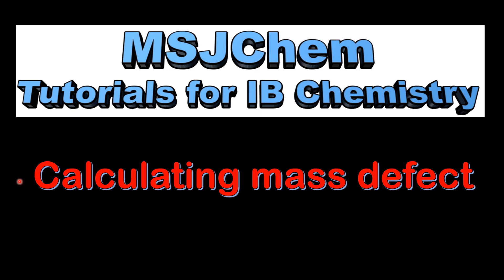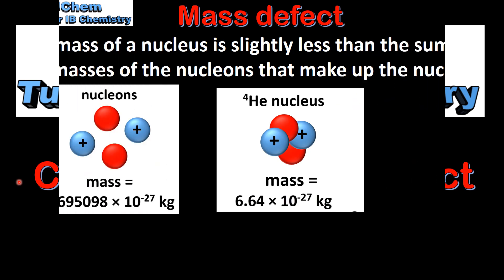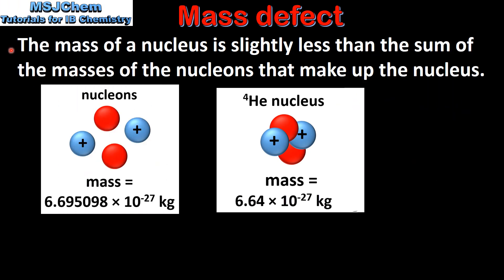This is MSJChem. In this video I'll be looking at calculating the mass defect. The mass of a nucleus is slightly less than the sum of the masses of the nucleons that make up the nucleus.